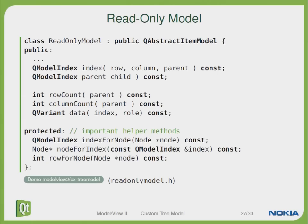The first step is the read-only model. The read-only model is derived from QAbstractItemModel and reimplements the index, the parent, the row, the column count and data.